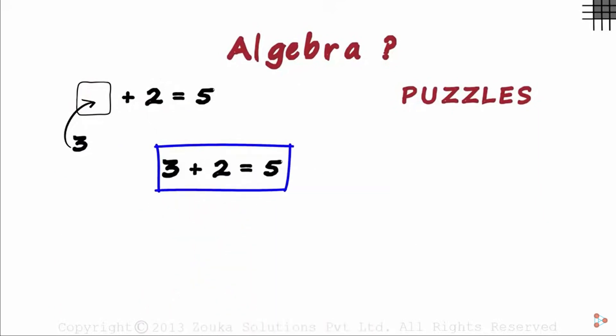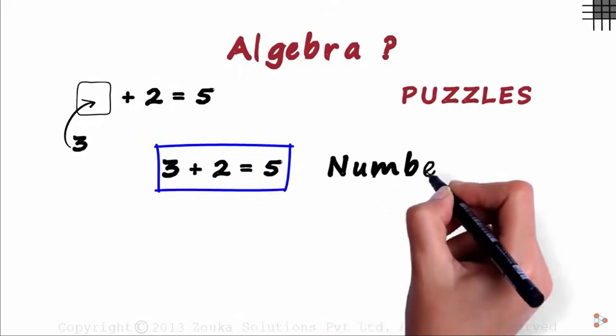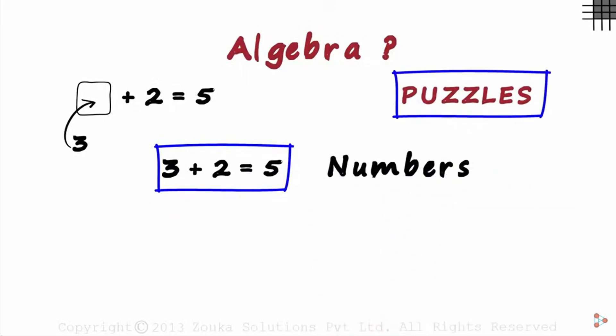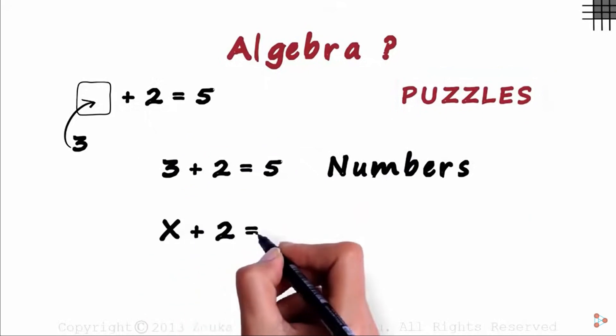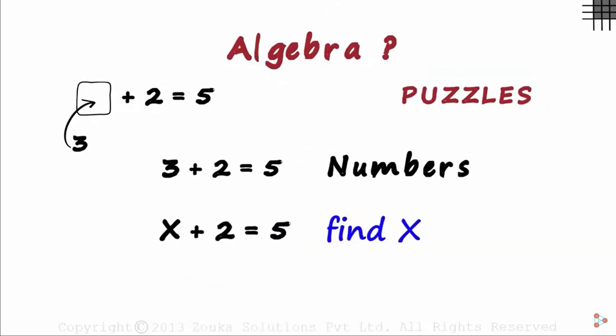This thing we see here contains only numbers. This puzzle can also be asked in a different way. We can say that x plus 2 equals 5. Find x. We just used a letter in place of the box. These letters are also called variables.